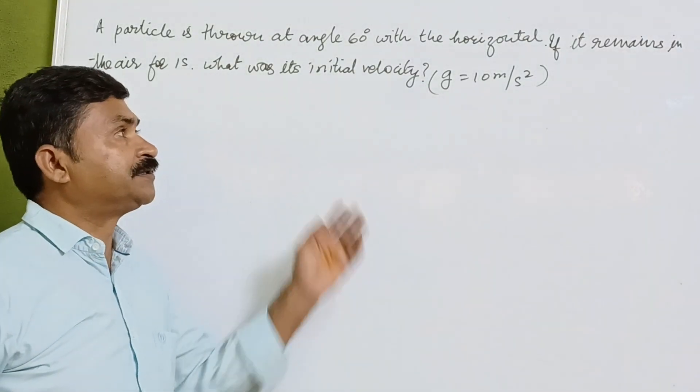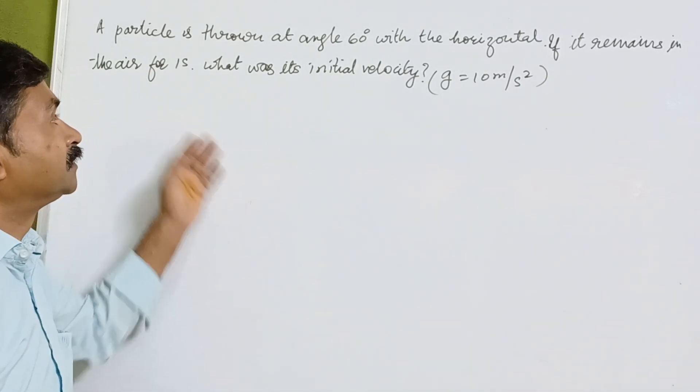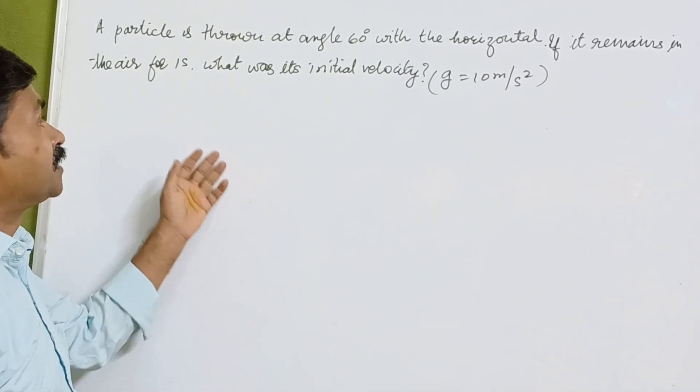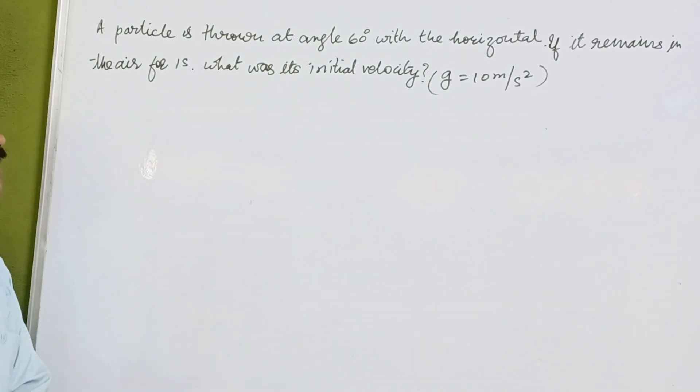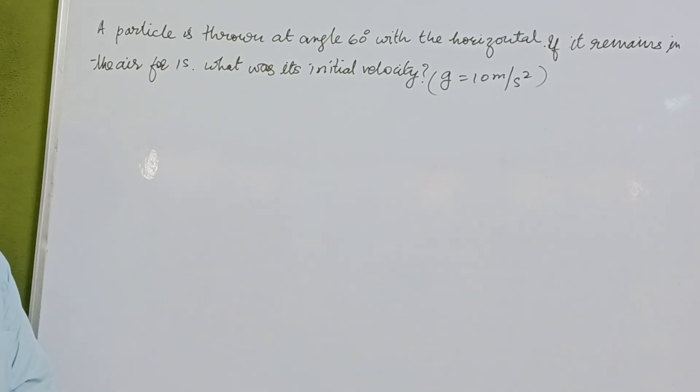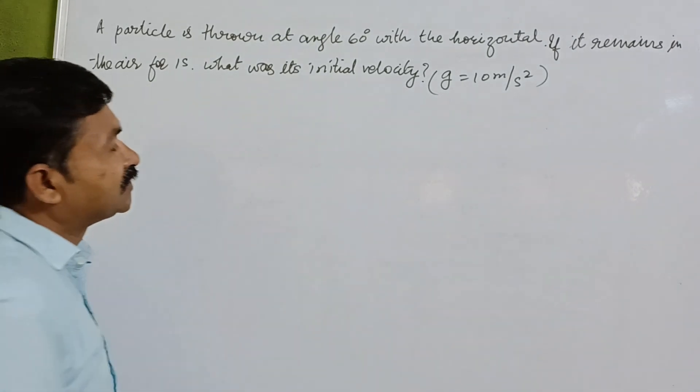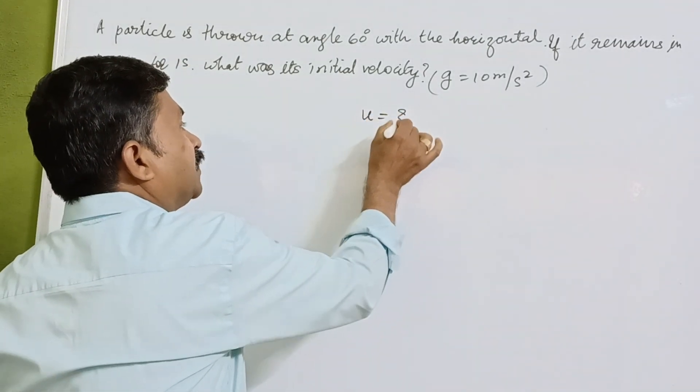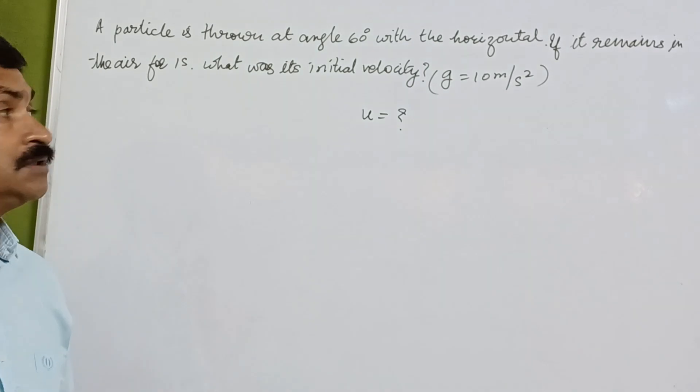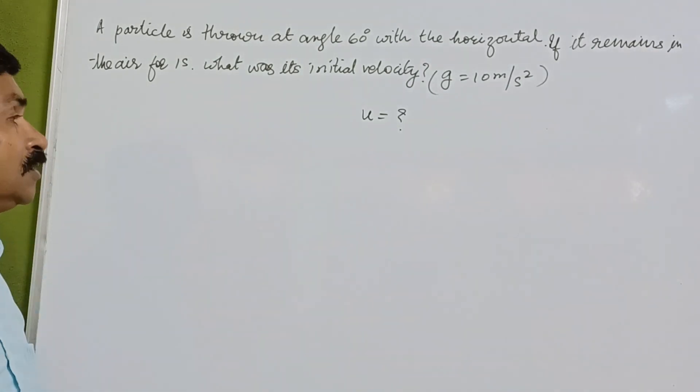Dear students, in the series of numerical physics we have a numerical which is based on projectile motion. A particle is thrown at an angle of 60 degrees with the horizontal. If it remains in the air for one second, what was its initial velocity? Now you have to determine u.